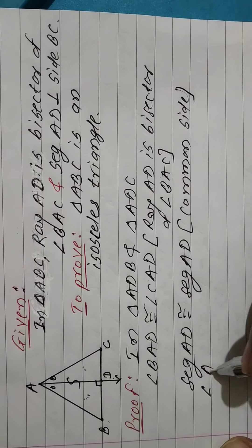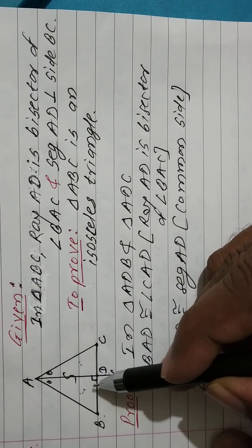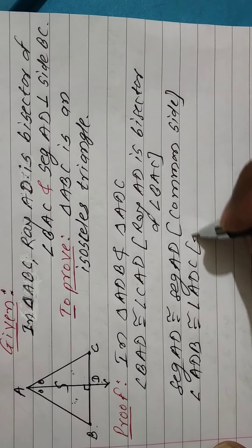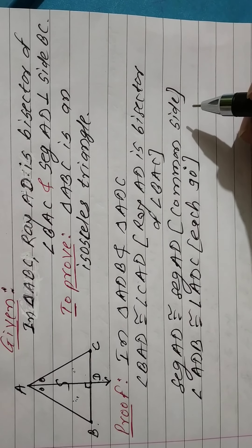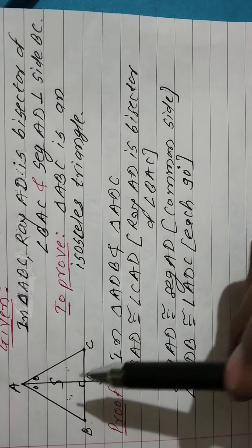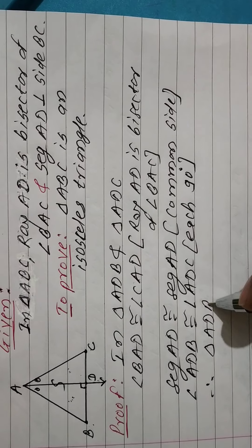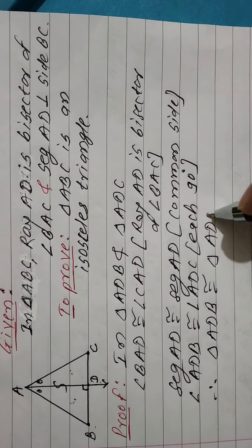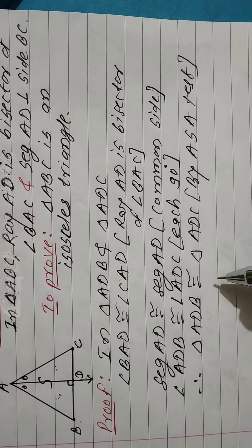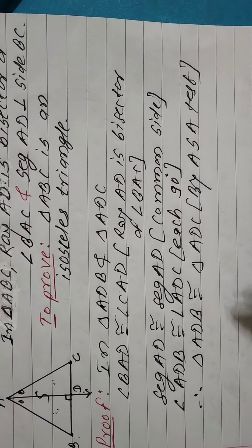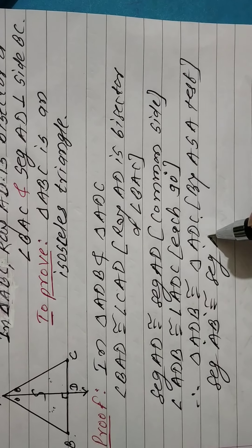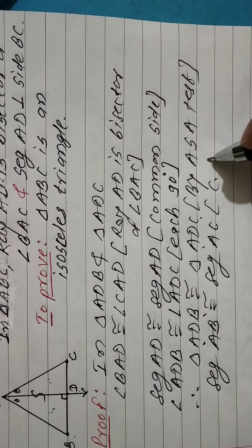Angle ADB is congruent to angle ADC — each is 90 degrees, i.e., each is a right angle, since AD is perpendicular to BC. Therefore, these two triangles are congruent by the Angle-Side-Angle test. Triangle ADB is congruent to triangle ADC by the ASA test. Since the two triangles are congruent, their corresponding remaining elements are also congruent.